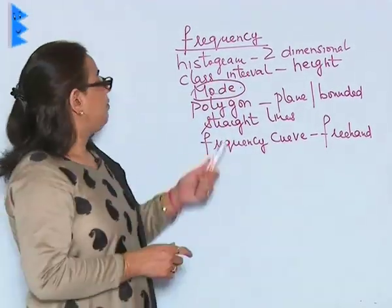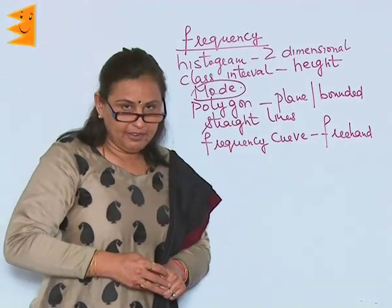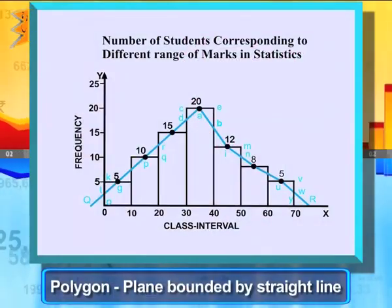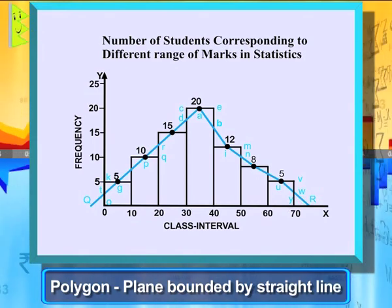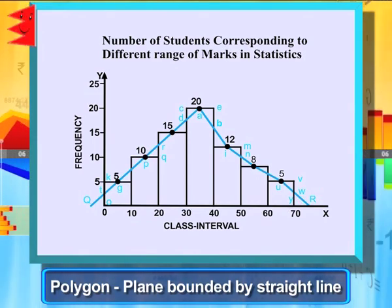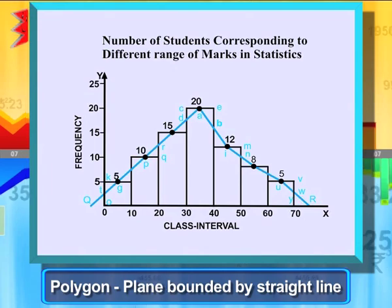Next is the polygon. A polygon is a plane bounded by straight lines. This can be drawn with or without the histogram.